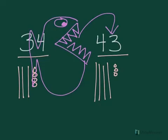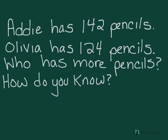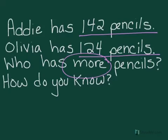Let's look at another example. Addy has 142 pencils. Olivia has 124 pencils. Who has more pencils? How do you know?